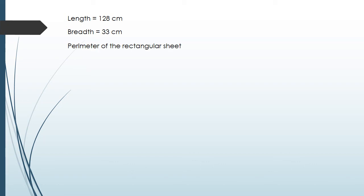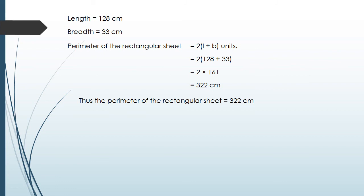Now we find the perimeter: length = 128 cm, breadth = 33 cm. Perimeter of rectangular sheet = 2 × (L + B) = 2 × (128 + 33) = 2 × 161 = 322 centimeters. Hence the perimeter of the rectangular sheet is 322 centimeters.